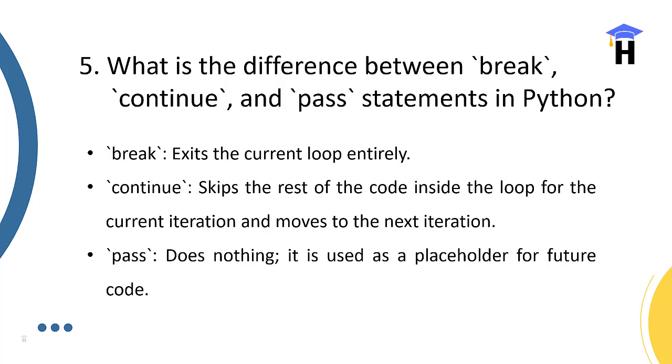What is the difference between break, continue and pass statements in Python? Break exits the current loop entirely, stopping or terminating. Continue skips the rest of the code inside the loop for the current iteration. When the loop is iterating, we continue the iterations. Pass does nothing but is used as a placeholder for future code. We continue the code execution, not terminate the loop.